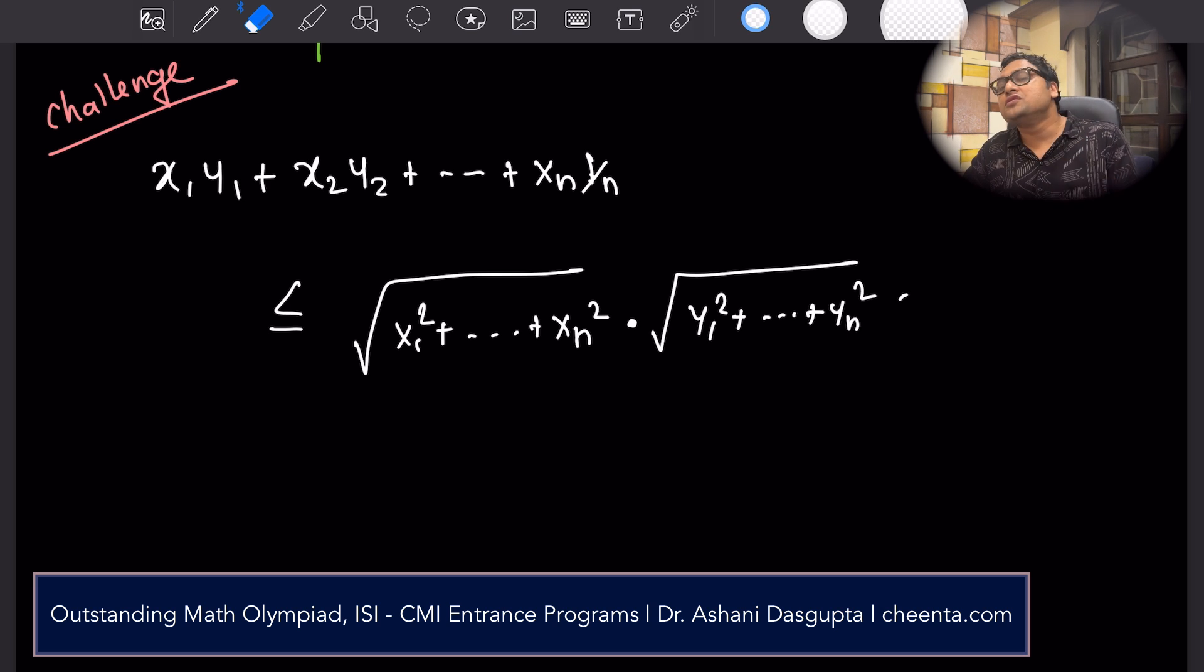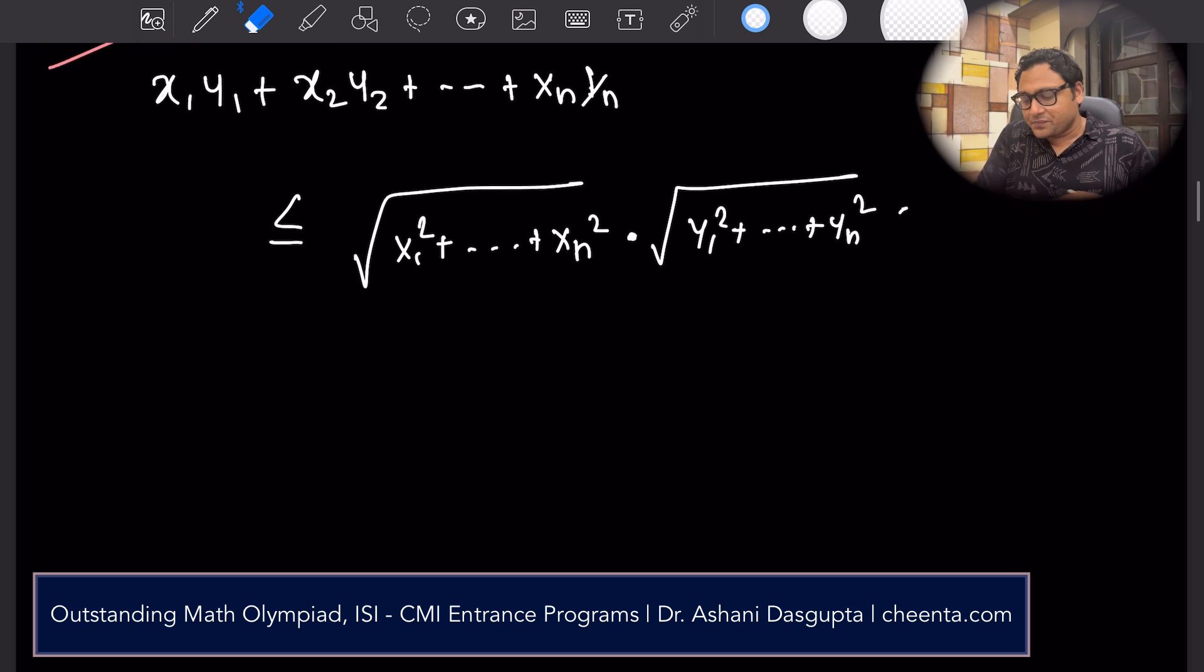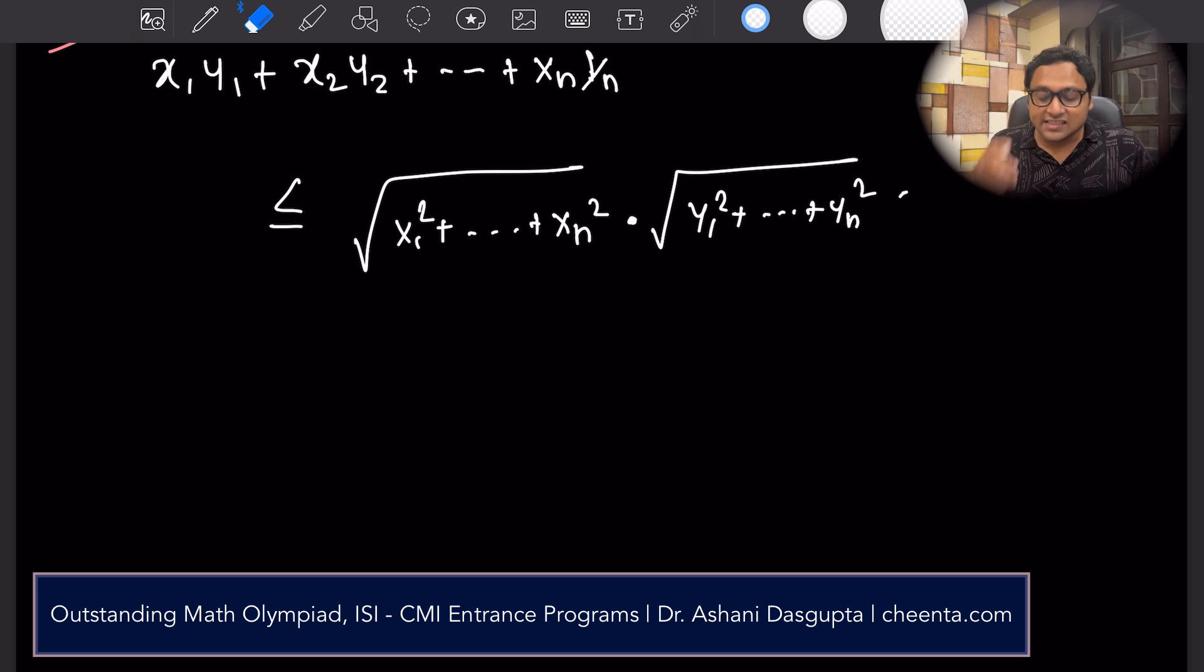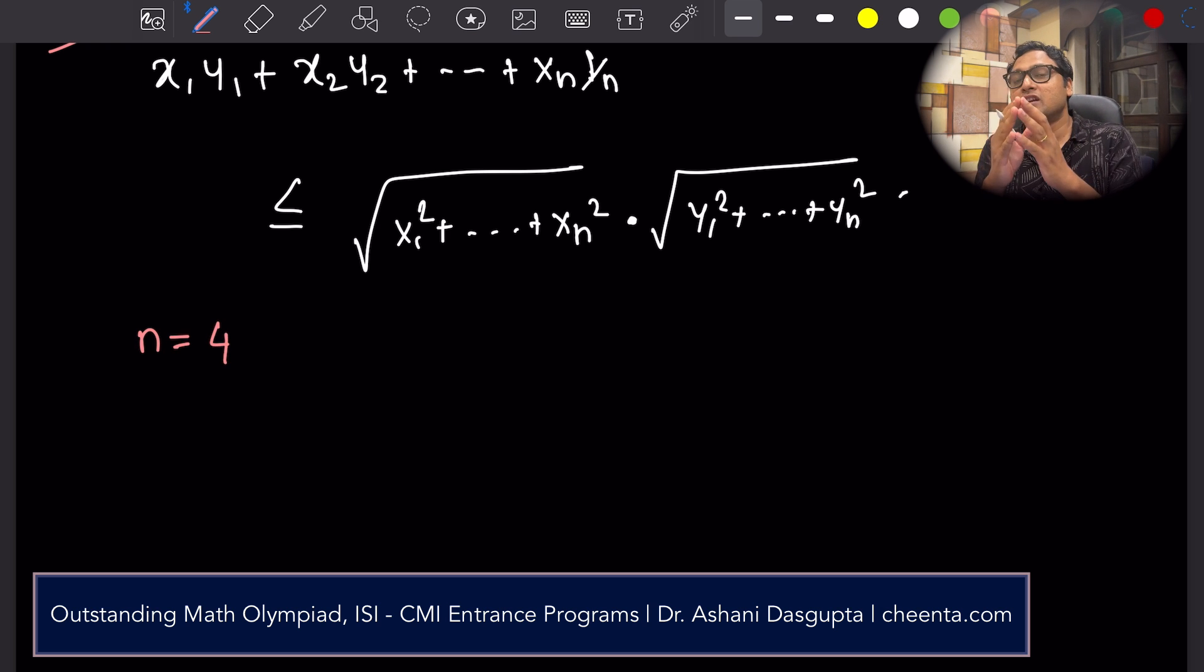Can you put a proof of that in the comment section? I'll just remove the absolute value for now to avoid confusion. Dot product less than or equal to product of magnitudes. How am I going to use this in this particular problem? Let me do it for the case of n equals to 4.